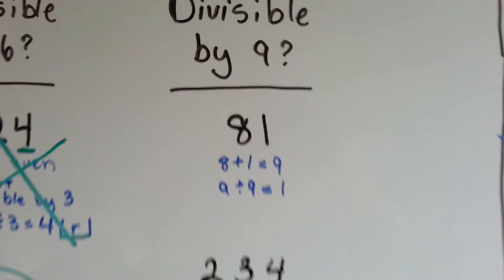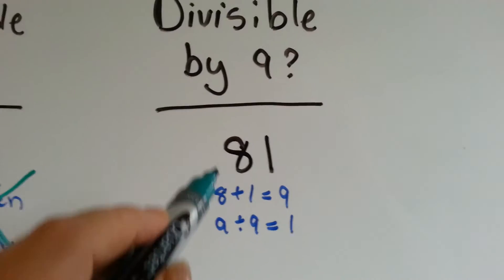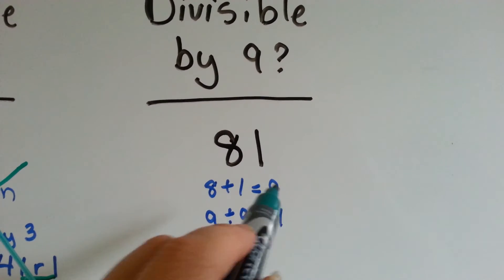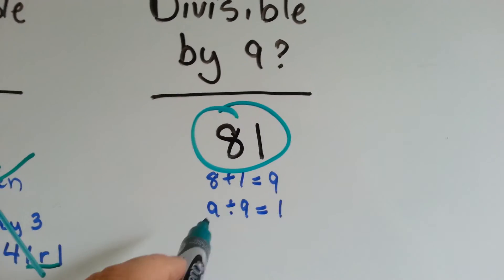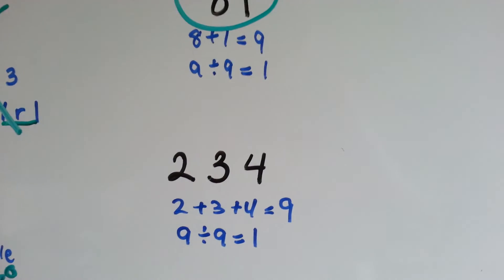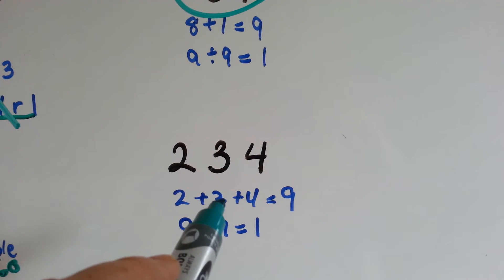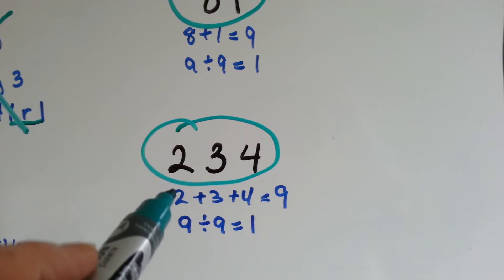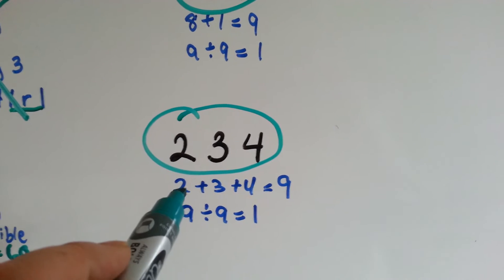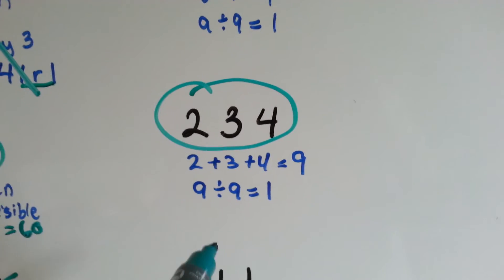The rule for 9 was: the sum of the digits can be divided by 9 with a 0 remainder — we have to add them up again. 81: we add 8 plus 1, it equals 9. Can you divide 9 by 9? Yeah, and it equals 1. How about 234? Let's add 2 plus 3 plus 4: 2 plus 3 is 5, 5 plus 4 is 9. And 9 divided by 9 is 1, so yes, 234 is divisible by 9. All the digits added up are divisible by 9 with a 0 remainder.